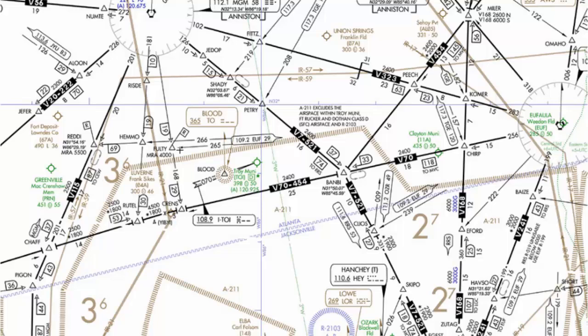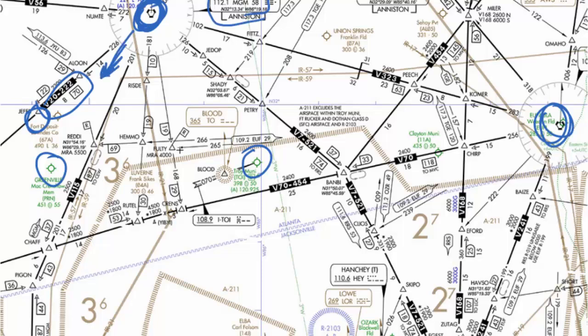Let's boil it down to the simplest terms. When we take off from an airport that does not have a standard instrument departure procedure — and many airports don't, even Montgomery — the first fix in our flight plan is always going to be some known point that we can fly to in order to get onto an airway or define our route. We're not going to just put airport then airway; we're going to go airport → known point → airway. That applies whether the known point is a VOR or an intersection.